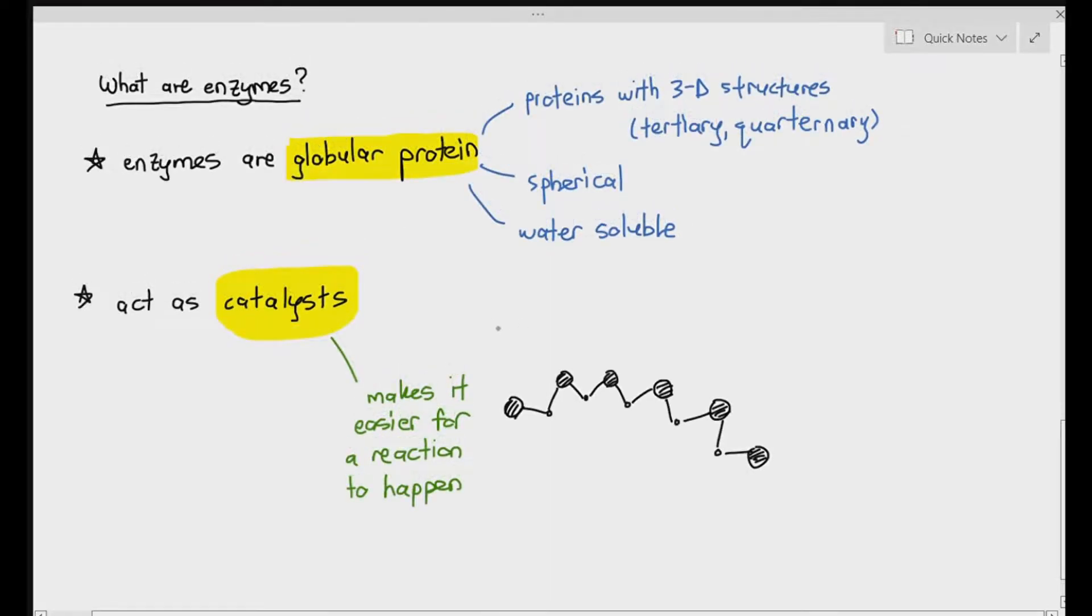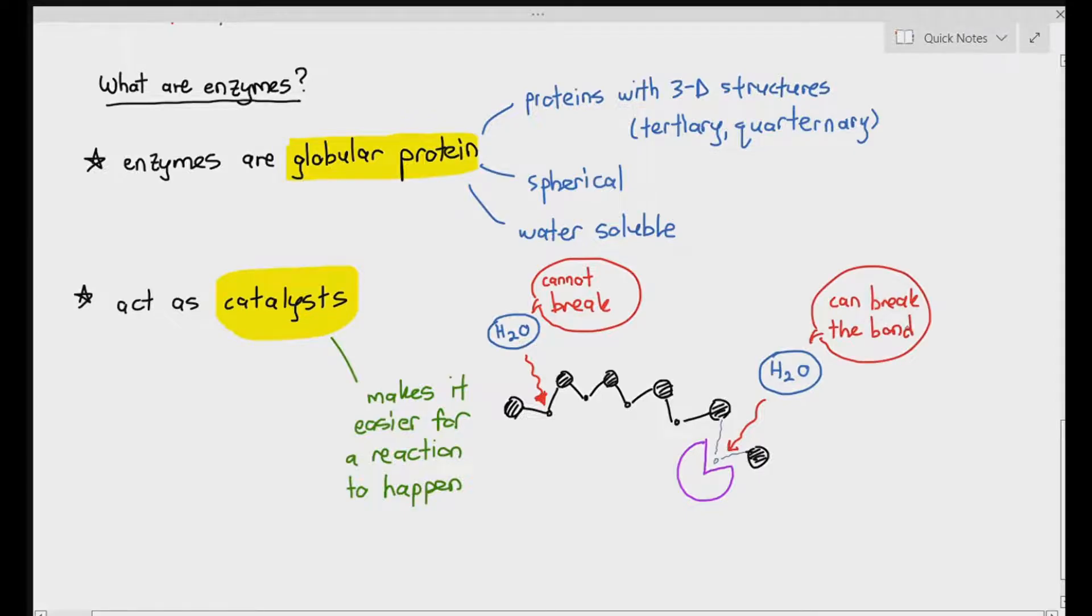So for example, if you have water molecule trying to break the glycosidic bond in the starch, will it be able to break it? No, it won't. It just can't break the glycosidic bond because the glycosidic bond is too strong to break down. But with the help of an enzyme that weakens the glycosidic bond on the right hand side, the water molecule can easily now break the bond. And therefore, hydrolysis can happen.